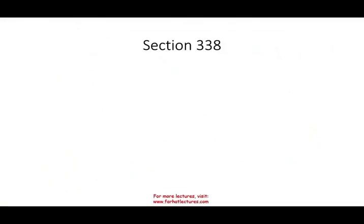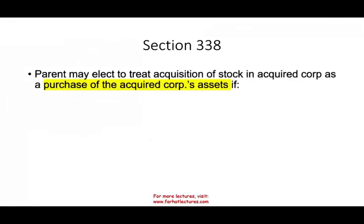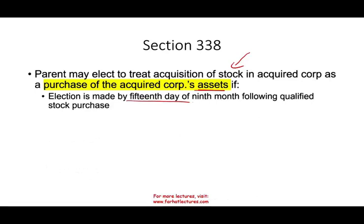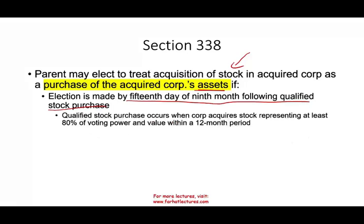Then there is Section 338. What is Section 338? You may elect to treat the purchase of the stock as a purchase of the asset. Rather than saying I'm buying the stock of Amazon, you would say I am buying the assets of Amazon — it's a deemed purchase. We have to make this election by the 15th day of the nine months following the qualified stock purchase. The qualified stock purchase starts when the corporation acquires at least 80% of the voting power within 12 months.